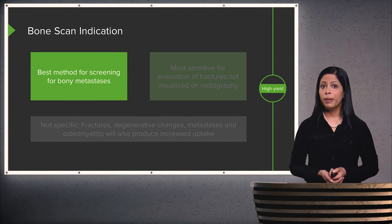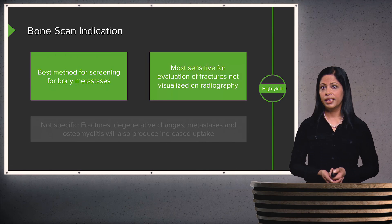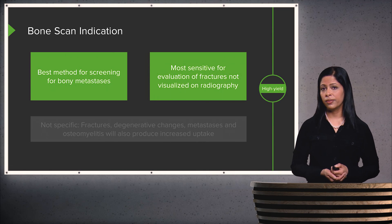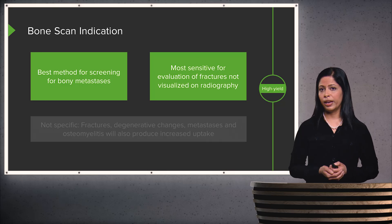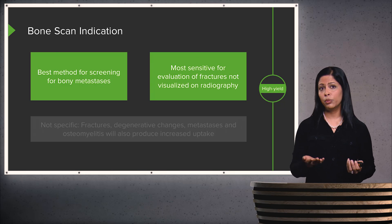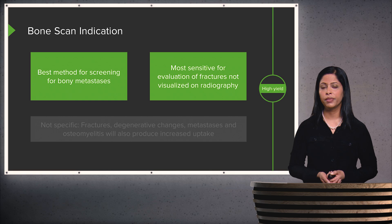Bone scans are really the best method for screening for bony metastases. It's the most sensitive modality to evaluate for fractures that are not visualized on radiography. Usually when a patient comes in for a fracture, the first modality would be a plain film. If not visible, the next step could be a bone scan, which would provide a very sensitive evaluation for a fracture.